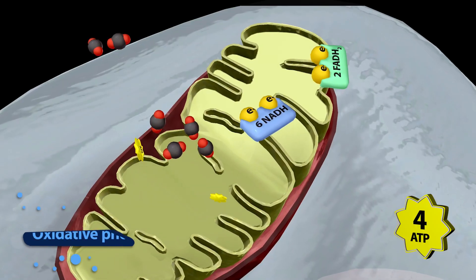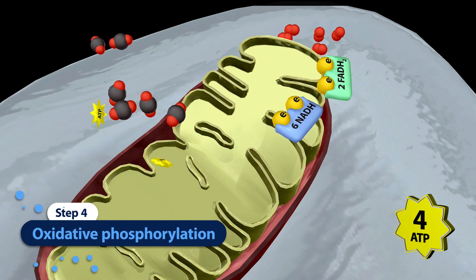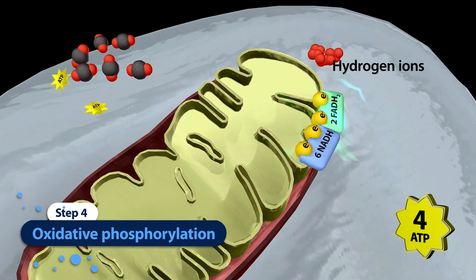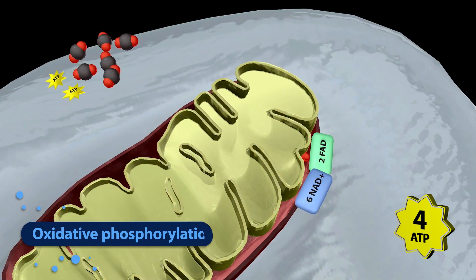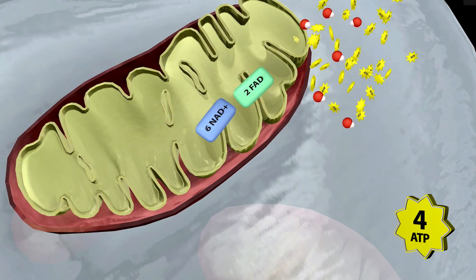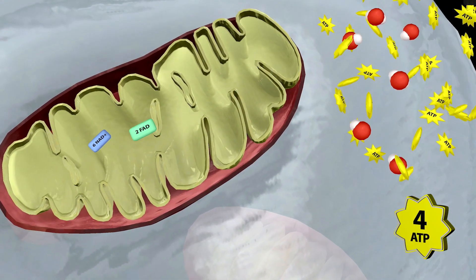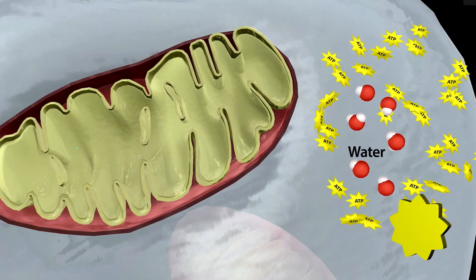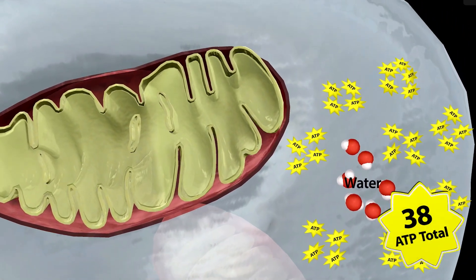NADH and FADH2 bring electrons to the electron transport chain, which are protein complexes in the inner mitochondrial membrane. During oxidative phosphorylation, electrons move down the electron transport chain, causing hydrogen ions to cross the mitochondrial membrane. Because these hydrogen ions are moving from high concentration to low concentration, the energy they give off is harnessed by ATP synthase and used to convert ADP to ATP.